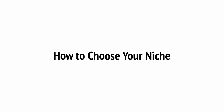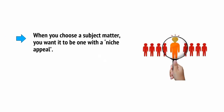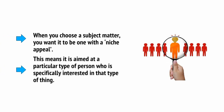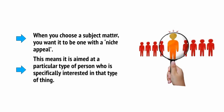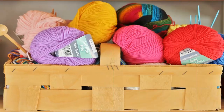It's very important that you choose this correctly, because the niche will affect the size of your potential audience. When you choose a subject matter, you want it to be one with niche appeal. This means it's aimed at a particular type of person who is specifically interested in that type of thing. An example of a niche might be knitting. If you have a blog about knitting and you sell knitting paraphernalia, only people who are interested in knitting are going to read your blog and buy from you. This way, you've cut out a niche for yourself rather than trying to appeal to everyone.